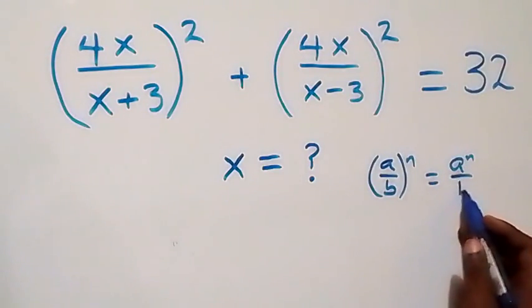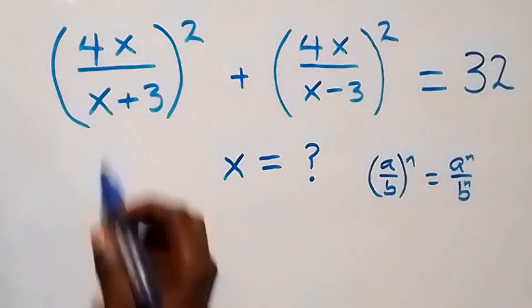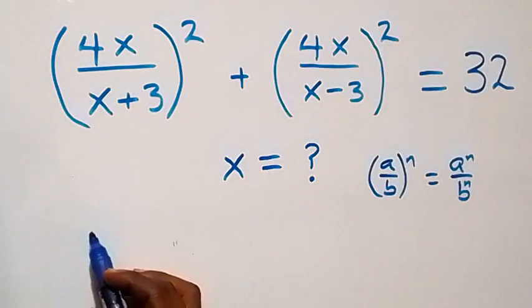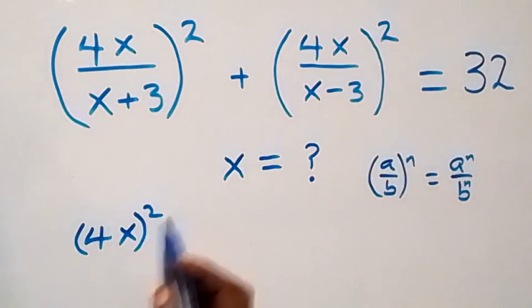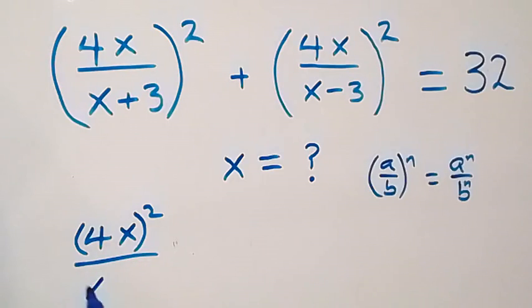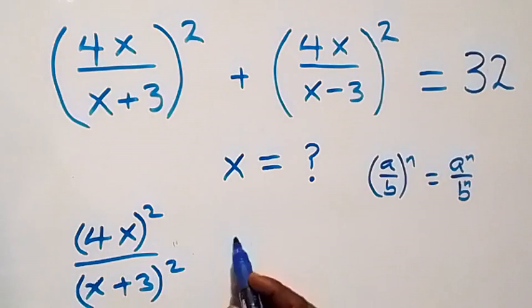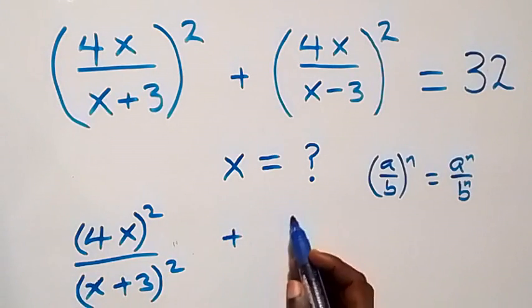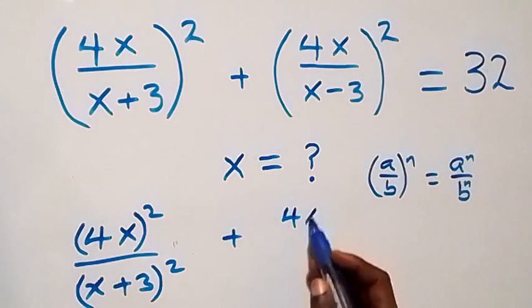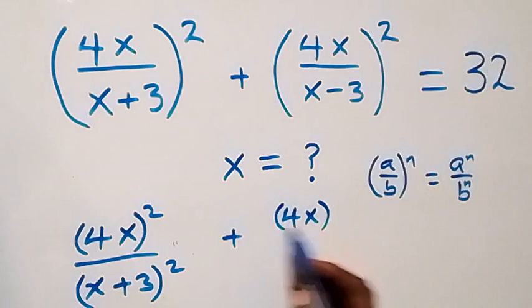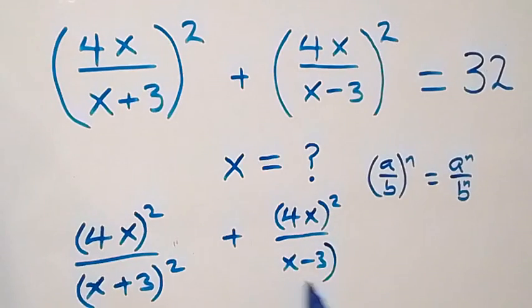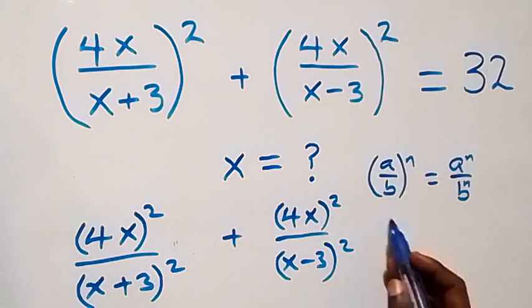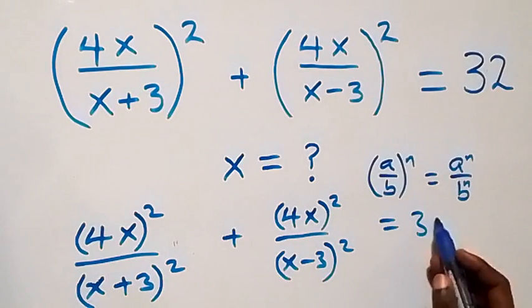From here this becomes (4x)² over (x+3)², then plus (4x)² over (x-3)², and this equals 32.